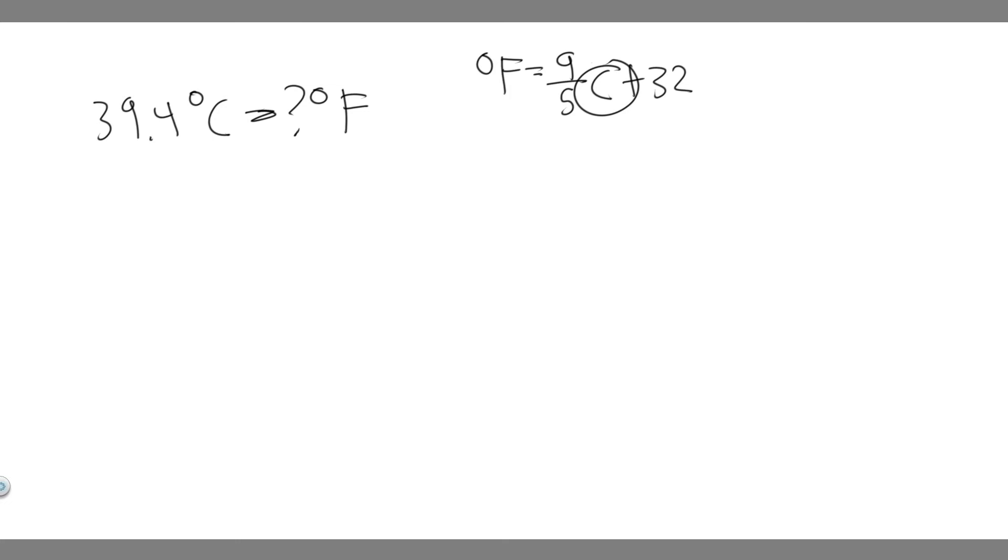So you just want to plug in your C value, multiply it by 9 over 5, and then add 32. And that's going to give you your Celsius in Fahrenheit.